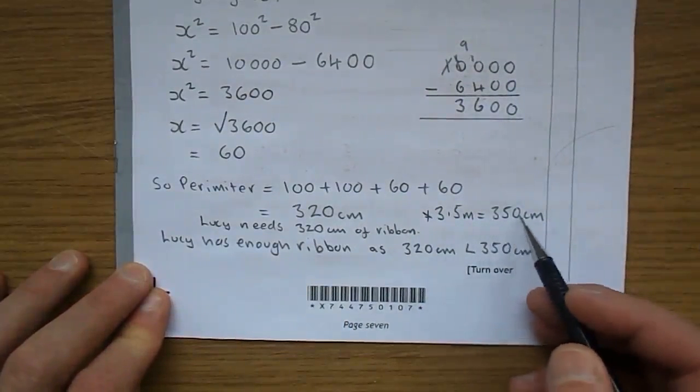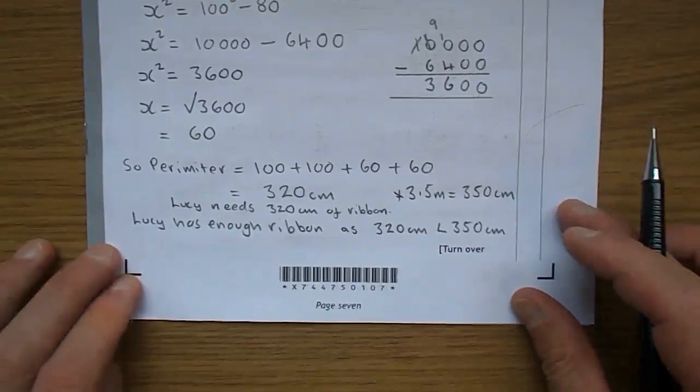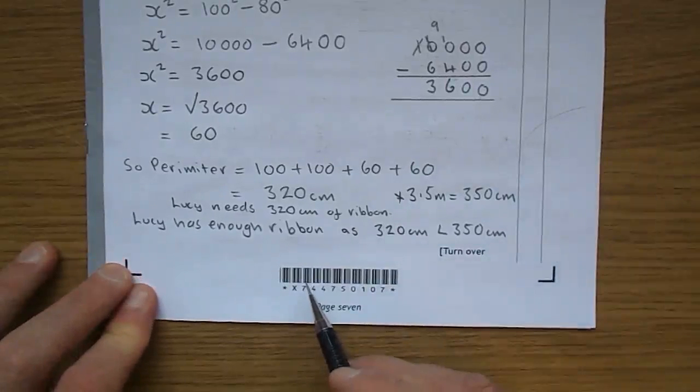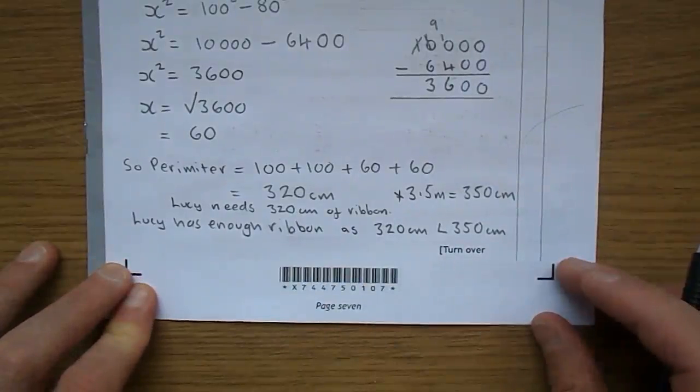Three and a half meters of ribbon, that's 350 centimeters. So she only needs 320, she's got 350. So she has enough ribbon in there.